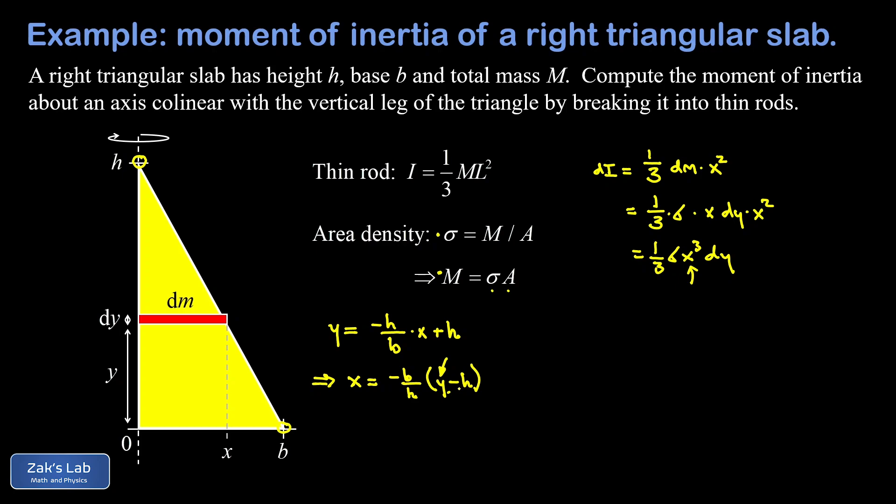Let's go back to our expression for dI and keep working on that. I can write this now as one-third sigma times x cubed - well now we can write x in terms of y. That's negative b over h times the quantity (y minus h), and this needs to be cubed and then multiplied by dy.